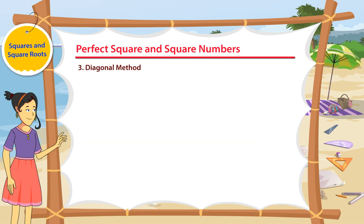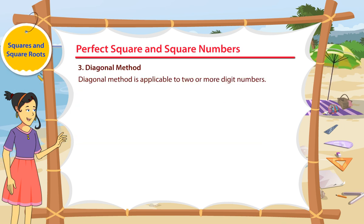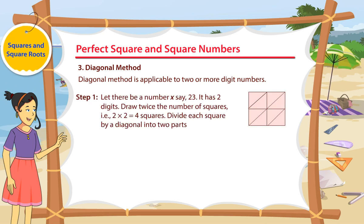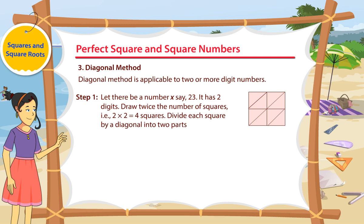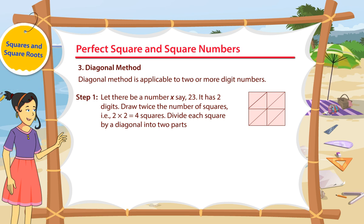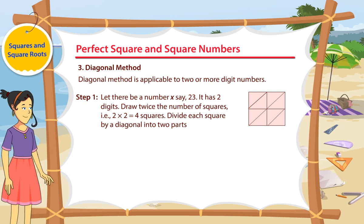Diagonal Method is applicable to two or more digit numbers. Step 1: Let there be a number x, say 23. It has two digits. Draw twice the number of squares, that is, 2 into 2 equals 4 squares. Divide each square by a diagonal into two parts.